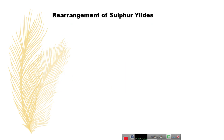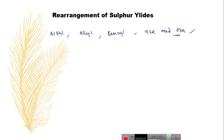Sulfur ylides can also undergo rearrangements, giving more stable sulfur compounds. There are different kinds of sulfur ylides that undergo different kinds of rearrangements. Let us discuss alkyl sulfonium ylides, allyl sulfur ylides, benzyl sulfur ylides, and also aza and oxa sulfonium ylides — all of which generally undergo rearrangement and give stable sulfur compounds.